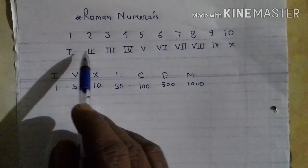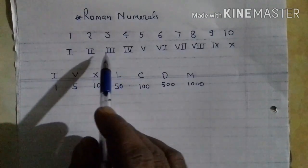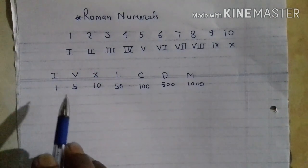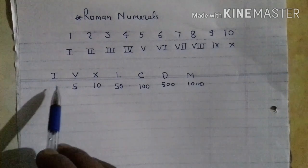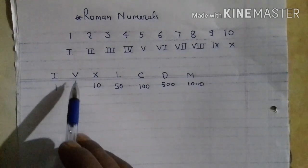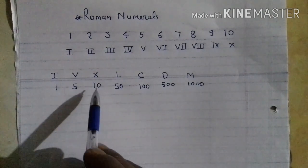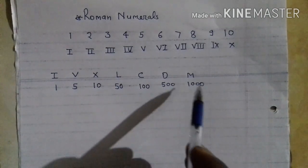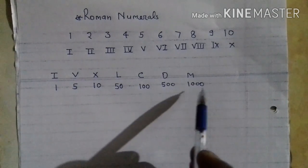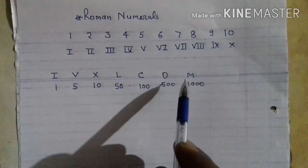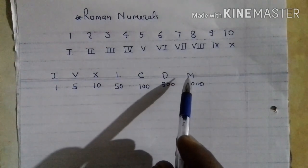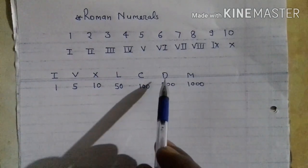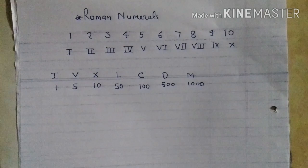I for 1, double I for 2, triple I for 3. These are some other symbols: I for 1, V for 5, X for 10, L for 50, C for 100, D for 500, M for 1000. For 1000 we write M in Roman numerals. For 500 we write D in Roman numerals.